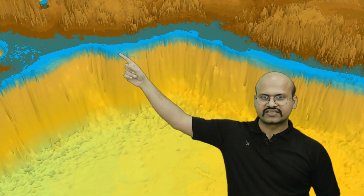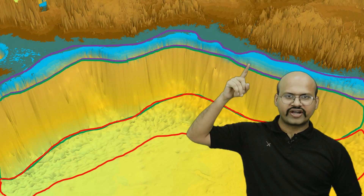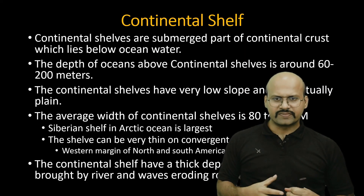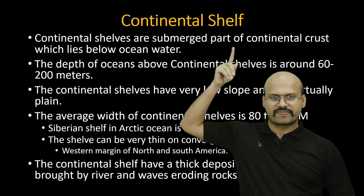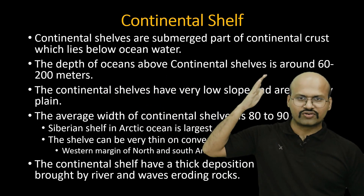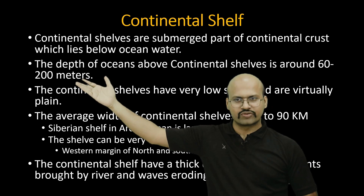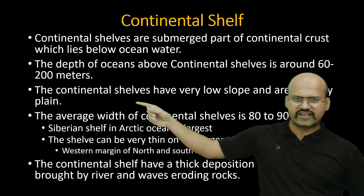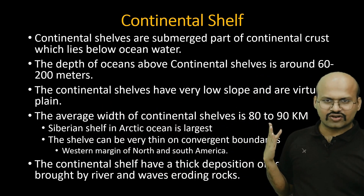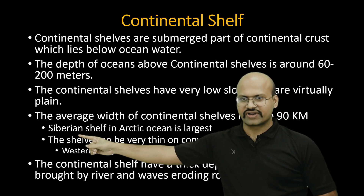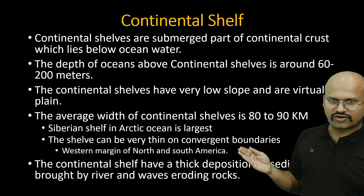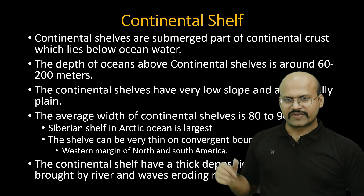To summarize: continental shelves are the submerged part of the continental crust lying below ocean water. The depth of ocean above continental shelves is around 6 to 300 meters. They have very low slope and are virtually plain regions. The average width is 80 to 90 kilometers. The highest thickness is found at the Siberian shelf, and shelves can be very thin at convergent boundaries like the western margins of North and South American plates.